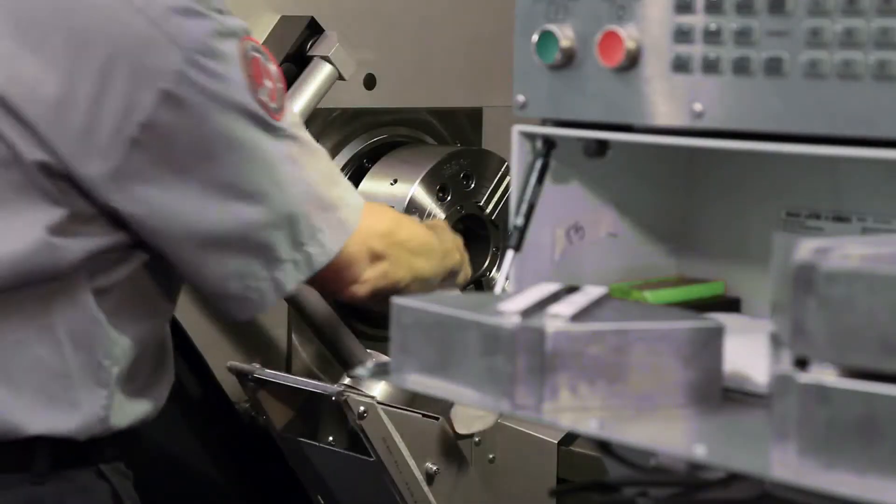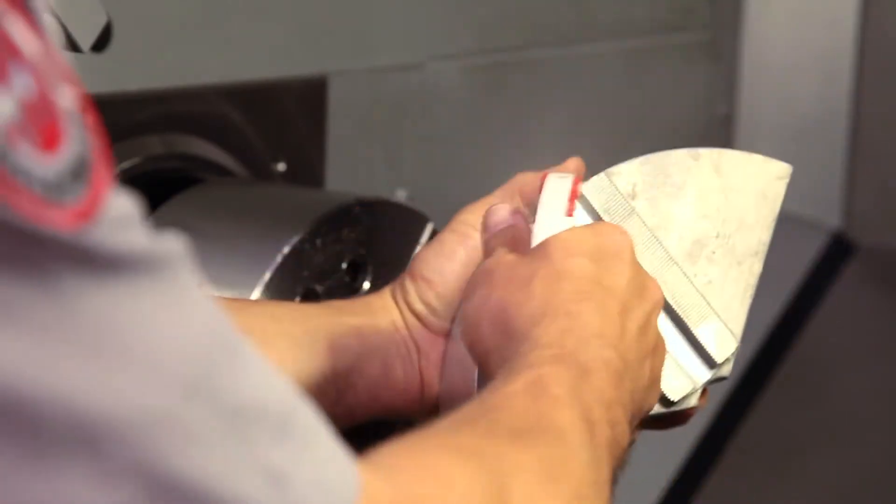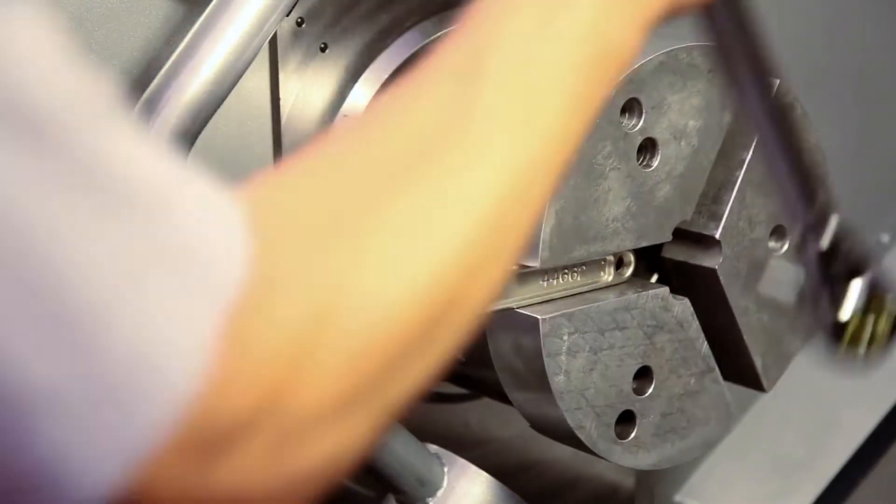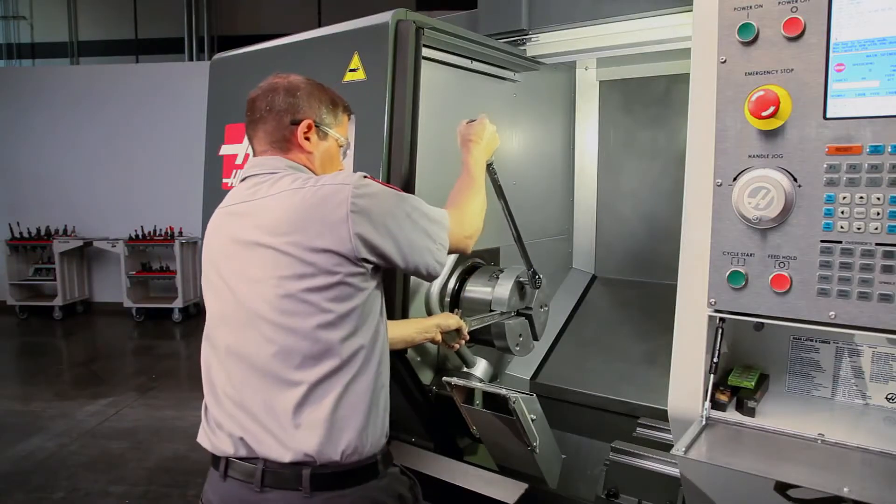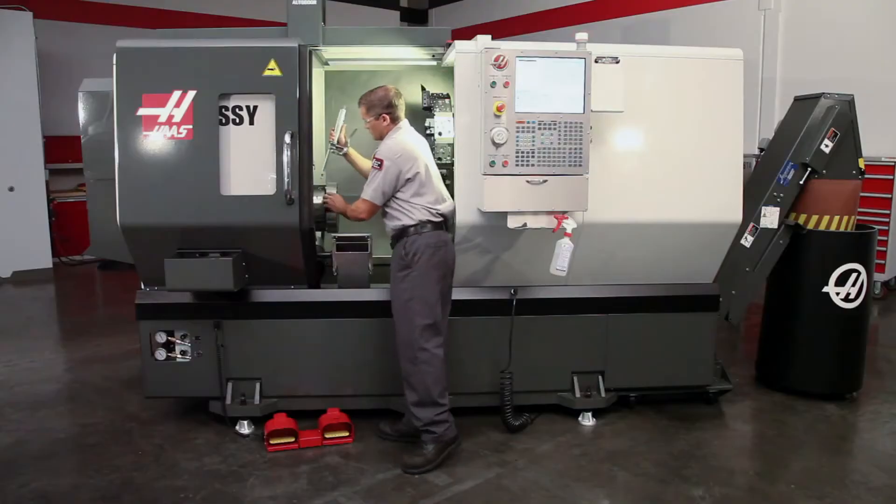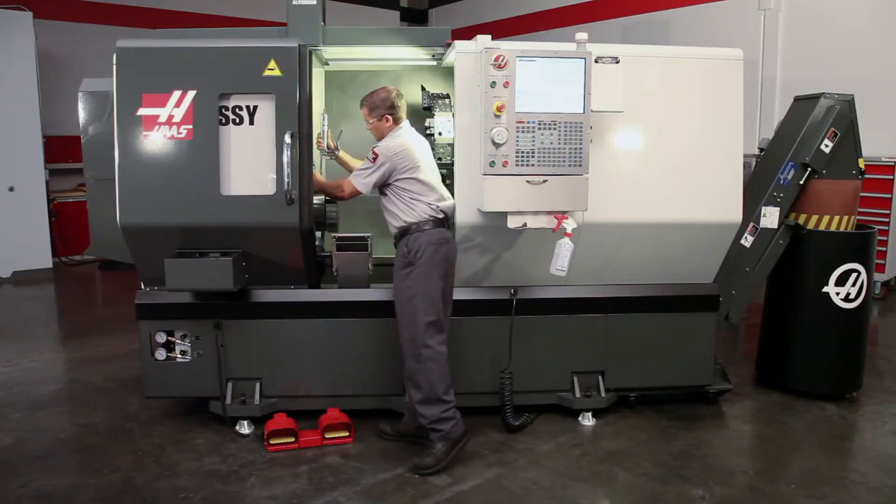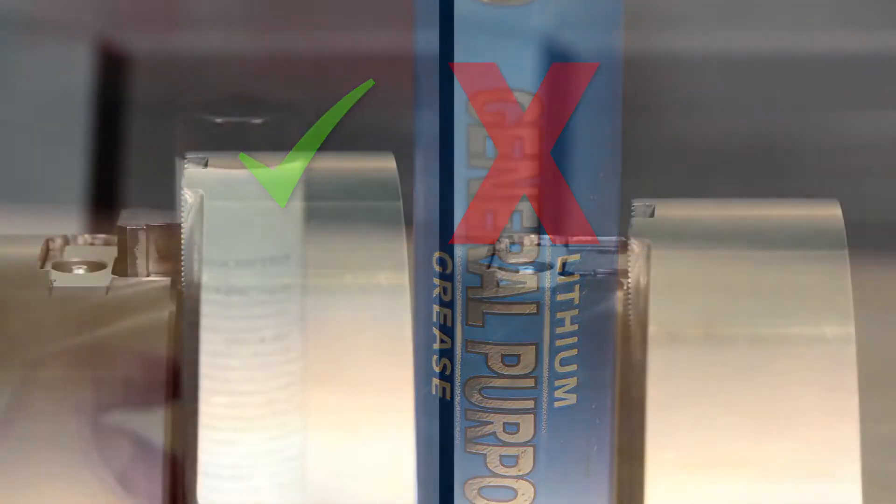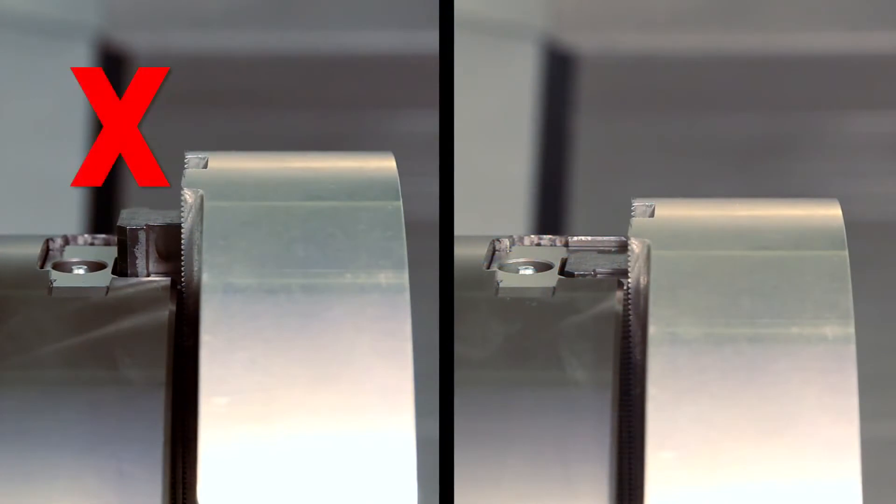As we covered in the previous video, we have ensured the jaws are clean before mounting, that the jaws are torqued in place, and that the chuck was lubricated at the beginning of the day using this Chuck-Ease grease. Remember, with our jaws in position for cutting, the T-nuts must be inside the chuck body.